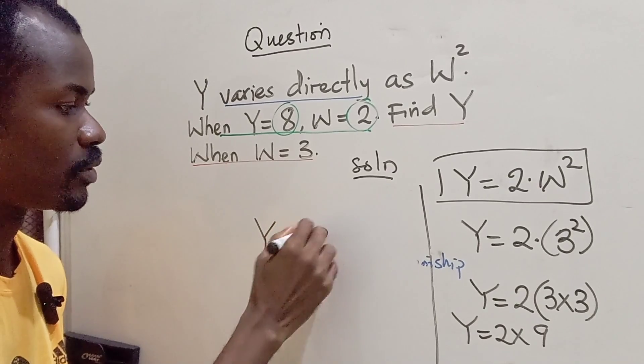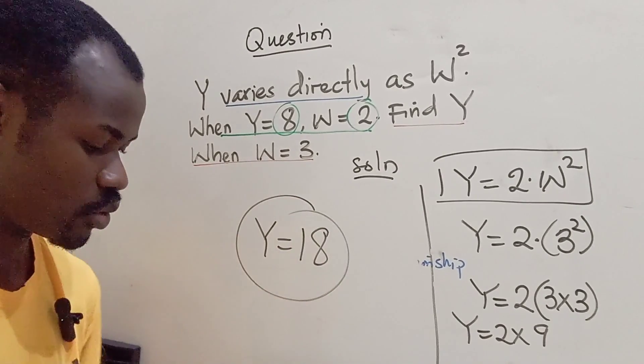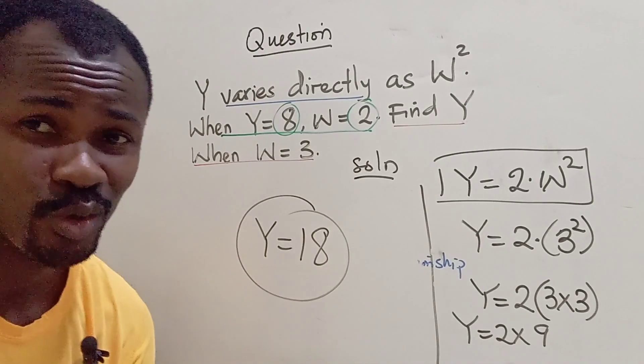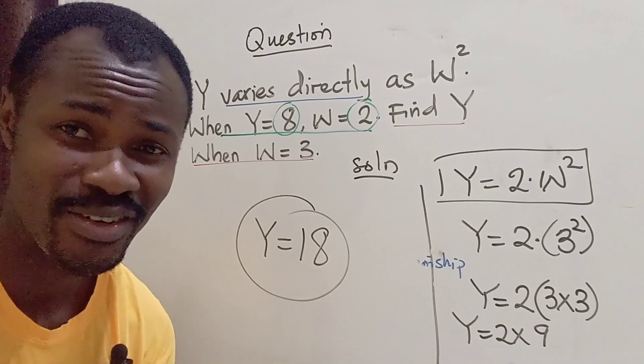So our Y in this problem is 18. So 18 gives us the solution to this simple problem on direct variation.